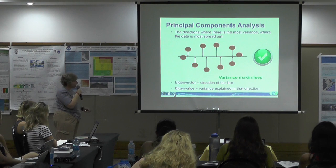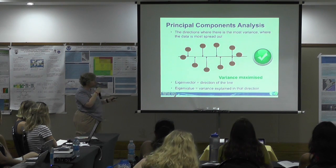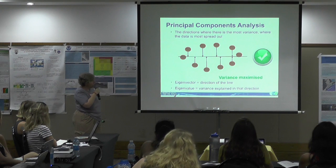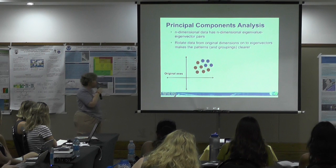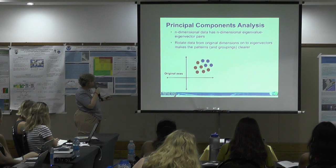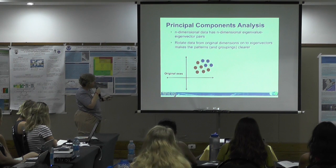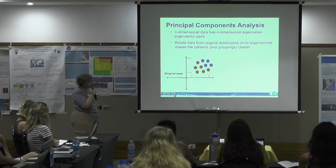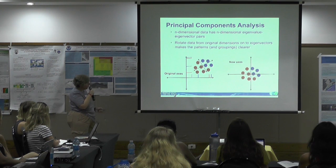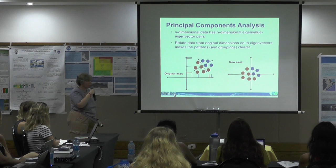The eigenvector is just the direction of the axis you're rotating to, and the eigenvalue is the amount of variance explained by that rotation. If you tried to plot these data points without the colour coding on one axis, you wouldn't realise there are actually two different clusters, because they're all overlocked. But if you rotate to where those lines are, you can see the nuances and clear groupings in the data.